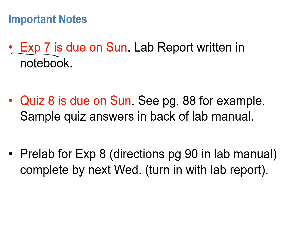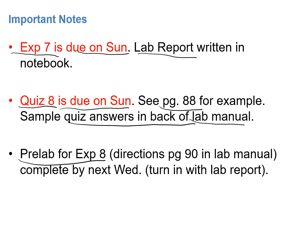Your experiment 7 lab report is due on Sunday night. You will also have a quiz on experiment 7 — quiz number 8 — which is also due Sunday night. You can refer to page 88 in your lab manual for an example quiz, and the answers are in the back of the lab manual. Your pre-lab for experiment 8 directions are on page 90 of the lab manual — the usual objective, background, and procedure written in your lab notebook — and should be completed by next Wednesday. The pre-lab will be turned in with your lab report.